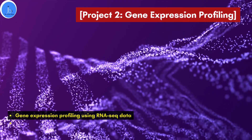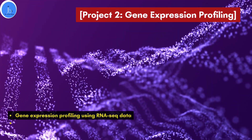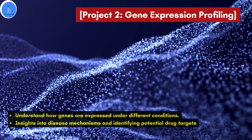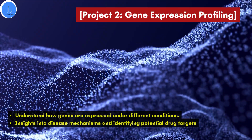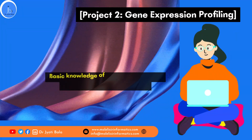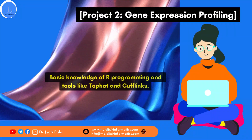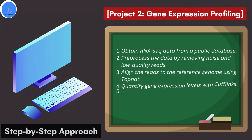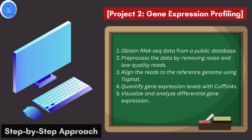The second project you can do is gene expression profiling. You may use RNA-seq data for this. This project helps you understand how genes are expressed under different conditions. The benefits include insight into disease mechanisms and identifying potential drug targets. You will need basic knowledge of programming and tools like TopHat and Cufflinks. Obtain RNA-seq data from a public biological database, then pre-process the data by removing noise and low-quality reads. Align the reads to the reference genome using TopHat, then quantify the gene expression level with Cufflinks. Finally, you can visualize and analyze differential gene expression.